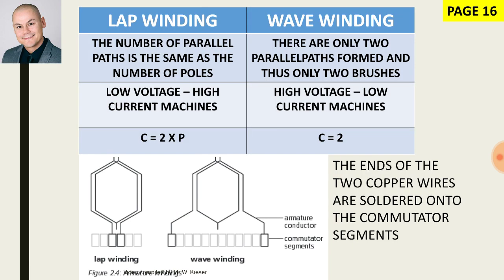Lap winding and wave winding — our armature can be wound in two ways, either lap or wave. For lap winding, the letter L tells us it is used for low voltage, high current applications, whereas wave winding is used for high voltage and low current applications. For a wave-wound armature, the number of parallel paths (C) is always two, whereas for lap winding the number of parallel paths is dependent on how many pole pairs there are.